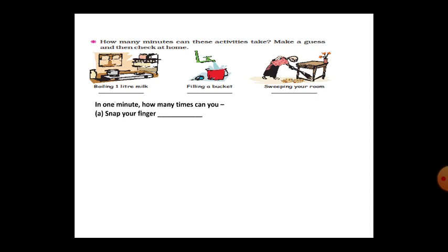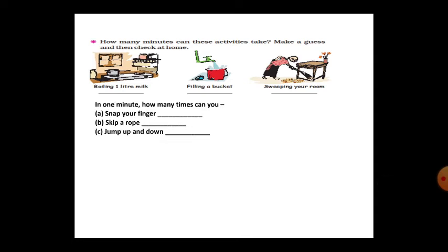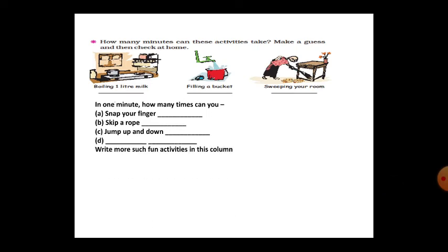In one minute, how many times can you snap your fingers? Count: one, two, three, four, five, six, seven, eight. Like that, skip a rope — how many times can you skip in one minute? Write more such fun activities in the column. In one minute, how many different activities can you do?